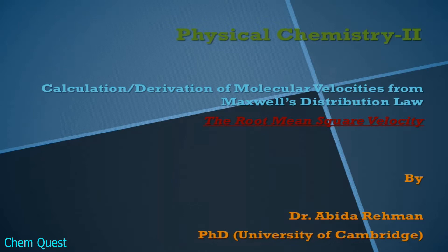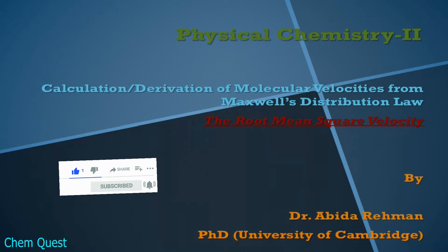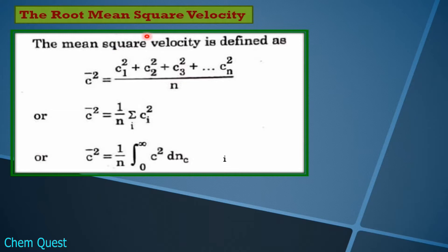Assalamu Alaikum students, welcome to the class of Physical Chemistry 2. We are doing the calculation and derivation of molecular velocities from Maxwell's distribution law. Today we will deduce the root mean square velocity from Maxwell's distribution equation. In order to deduce root mean square velocity, we will first see what is mean square velocity.